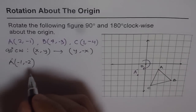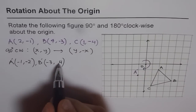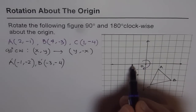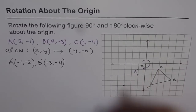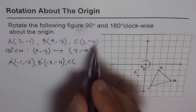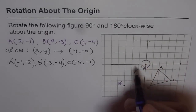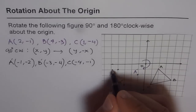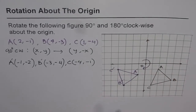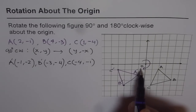Now let's calculate the position of B dash, the image of B. We interchange X and Y, so it becomes (-3, 4), and then change the sign for Y to get (-3, -4). That is the new location for B dash. For C dash, the position becomes (-4, 1) with a negative sign for Y, giving (-4, -1). Let's join A dash, B dash, and C dash — that is how our new triangle looks after 90 degrees clockwise rotation. The triangles are congruent; only their position has changed.